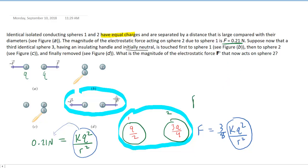We'll just come up. We're going to have F equals 3 eighths times, and then again, the KQ squared over R squared is 0.21 newtons. And when you punch that into your calculator, you should end up with 0.07875 newtons.